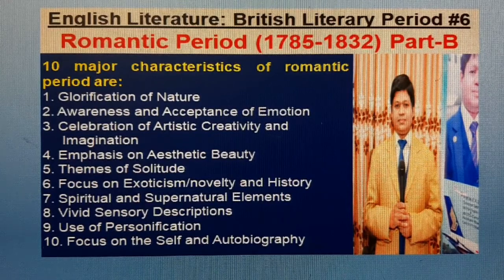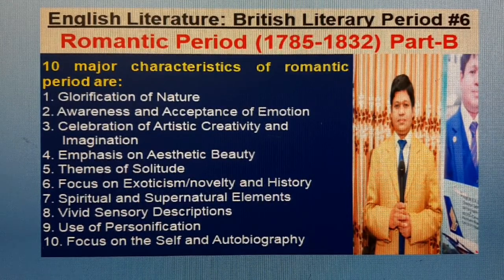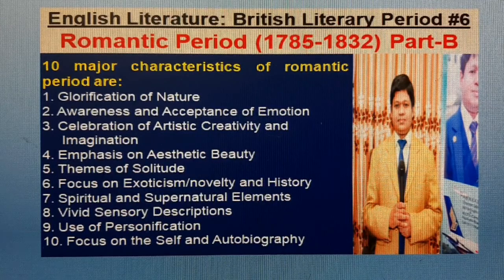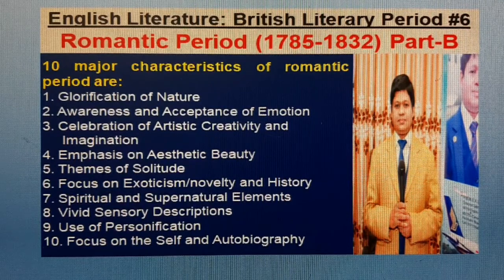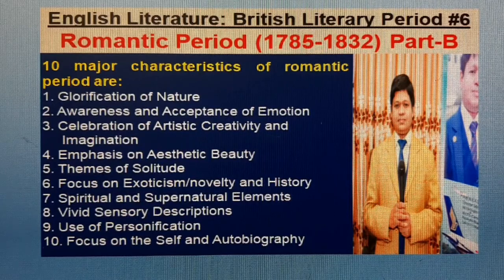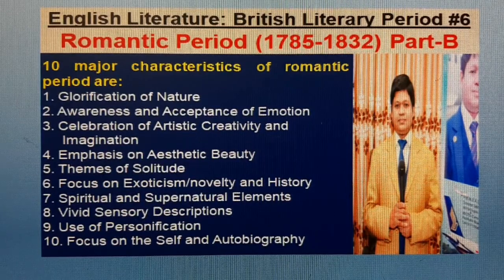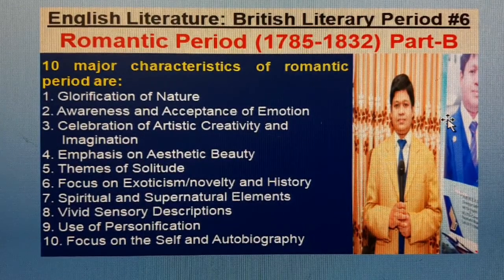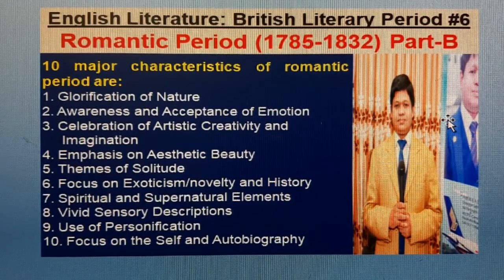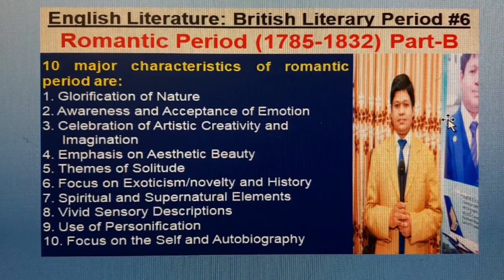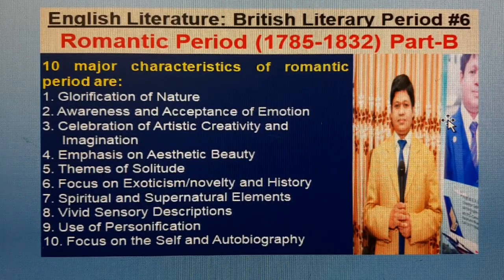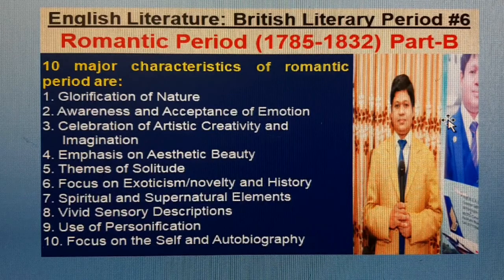The 10 Major Characteristic Features of the Romantic Period are: 1. Glorification of nature. 2. Awareness and acceptance of emotion. 3. Celebrations of artistic creativity and imagination. 4. Emphasis on aesthetic beauty. 5. Themes of solitude. 6. Focus on exoticism, novelty and history. 7. Spiritual and supernatural elements. 8. Vivid sensory descriptions. 9. Use of personification. 10. Focus on the self and autobiography.